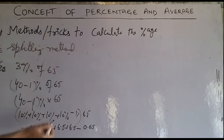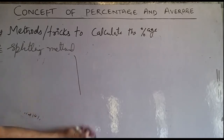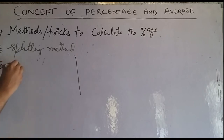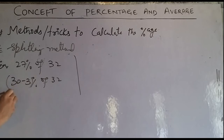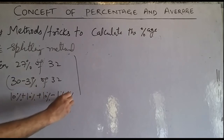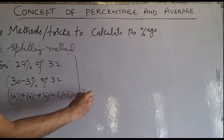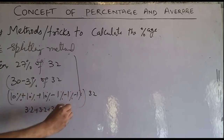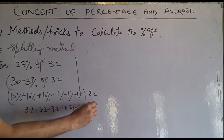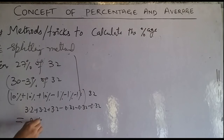Another example using the direct method: 37% of 32. Split as 30 plus 7 percent, or 30 minus 3 percent of 32. 30% of 32 is 9.6. Minus 3 × 1% of 32 = 3 × 0.32 = 0.96. Result: 9.6 + 3 × 3.2 minus 0.96 = 11.84. Simplified answer: approximately 11.84.